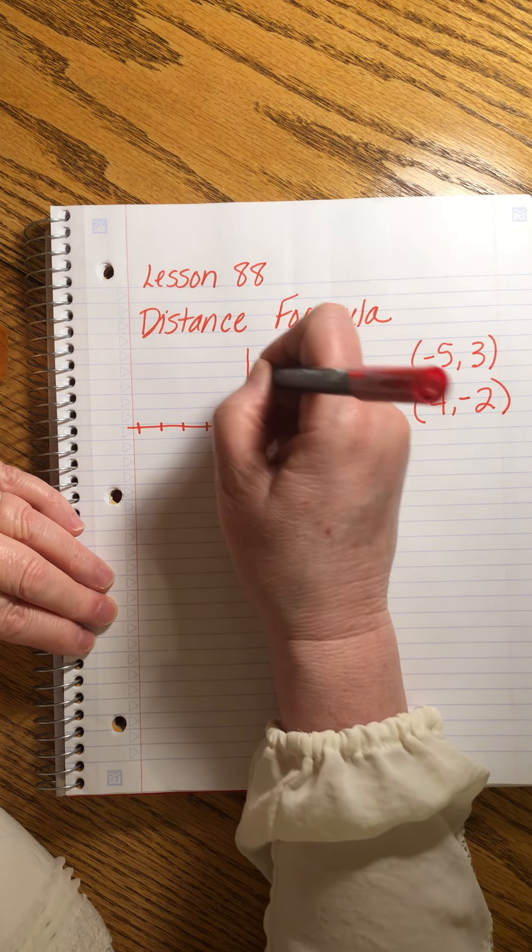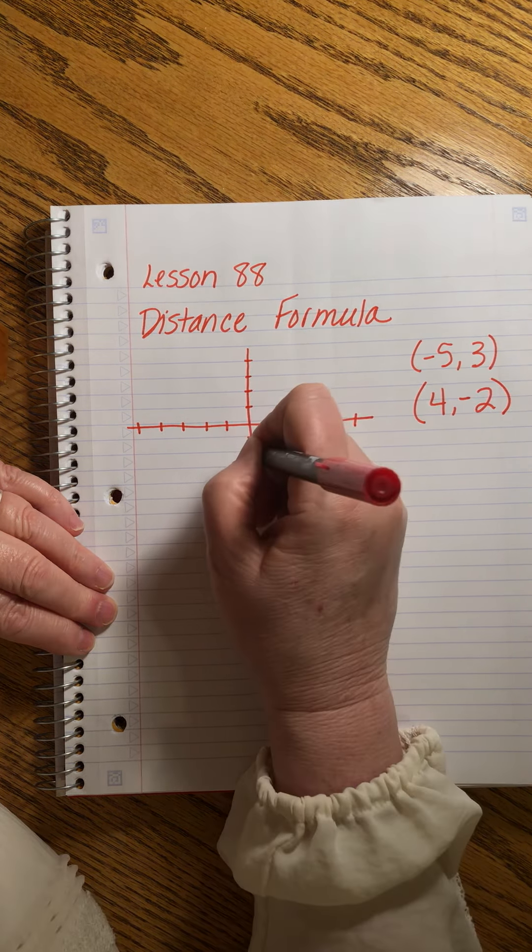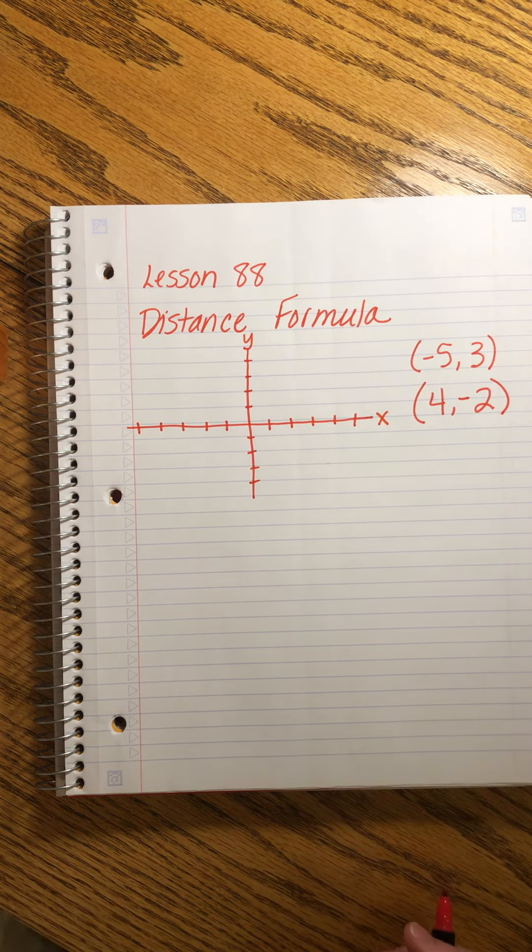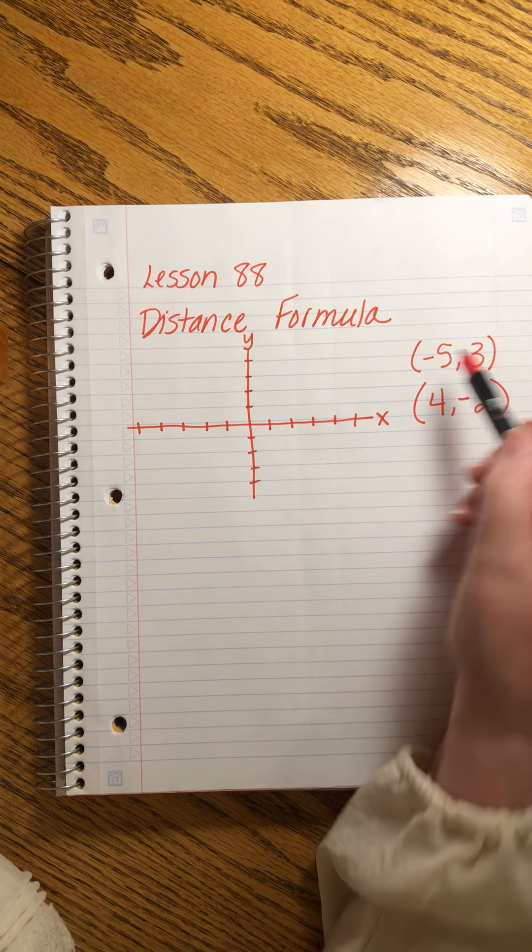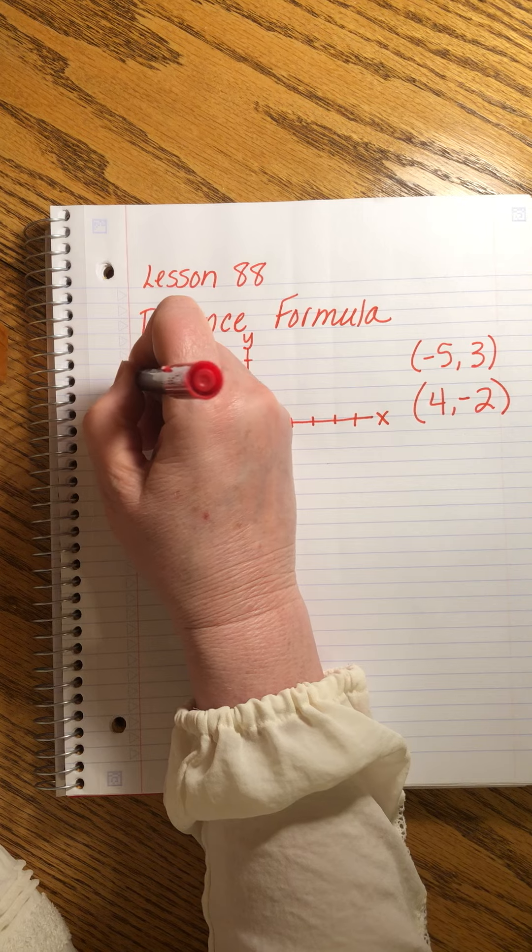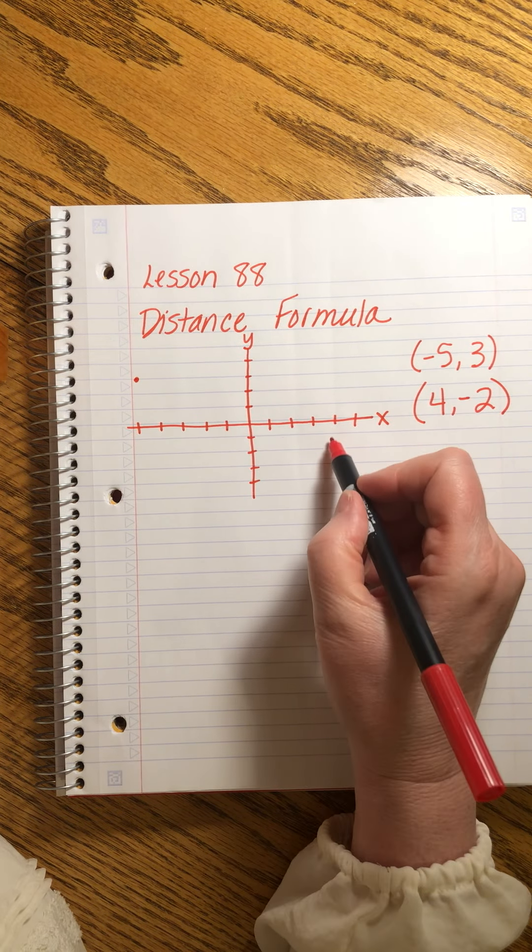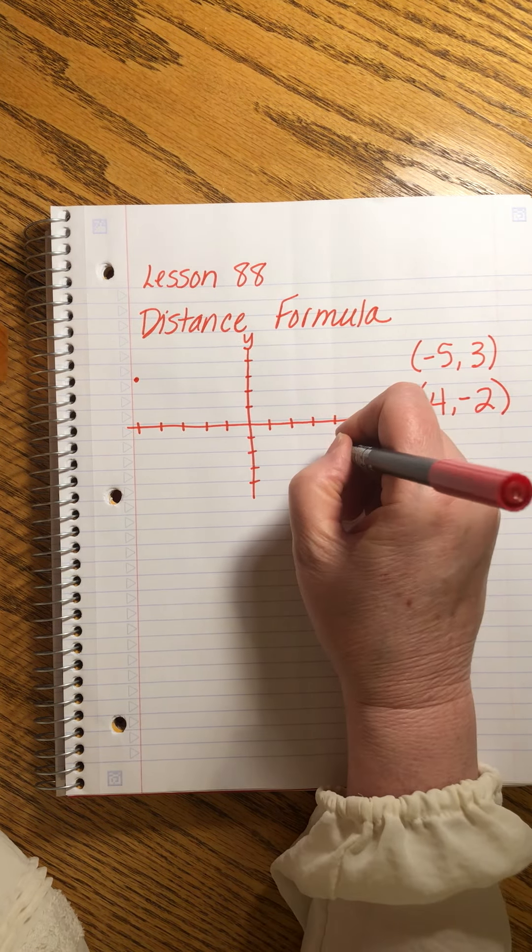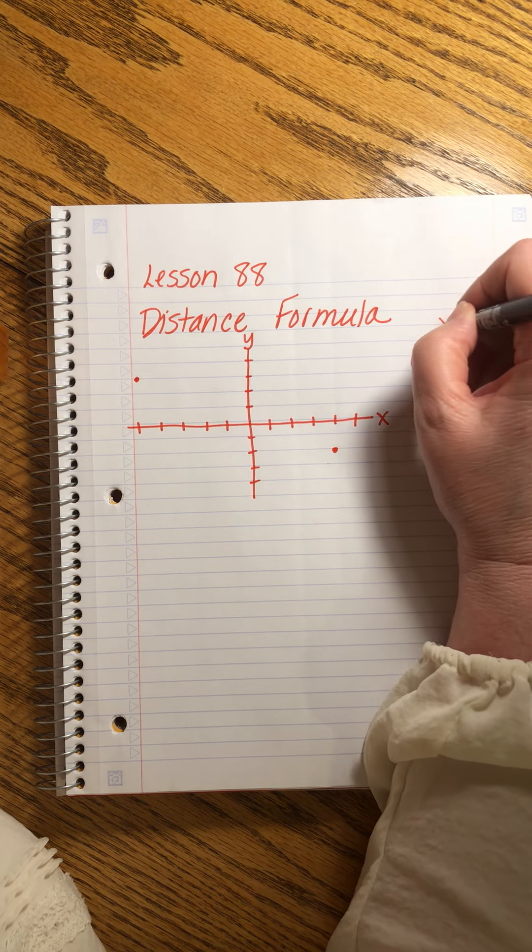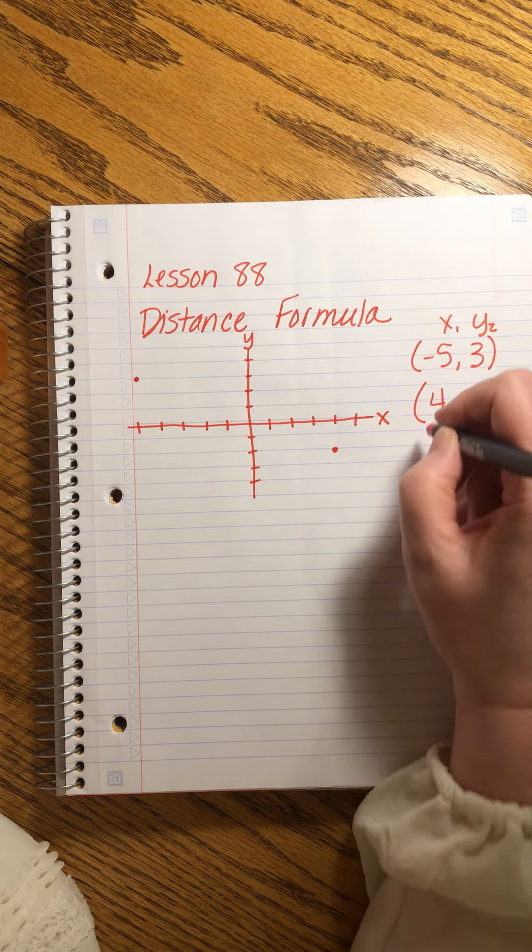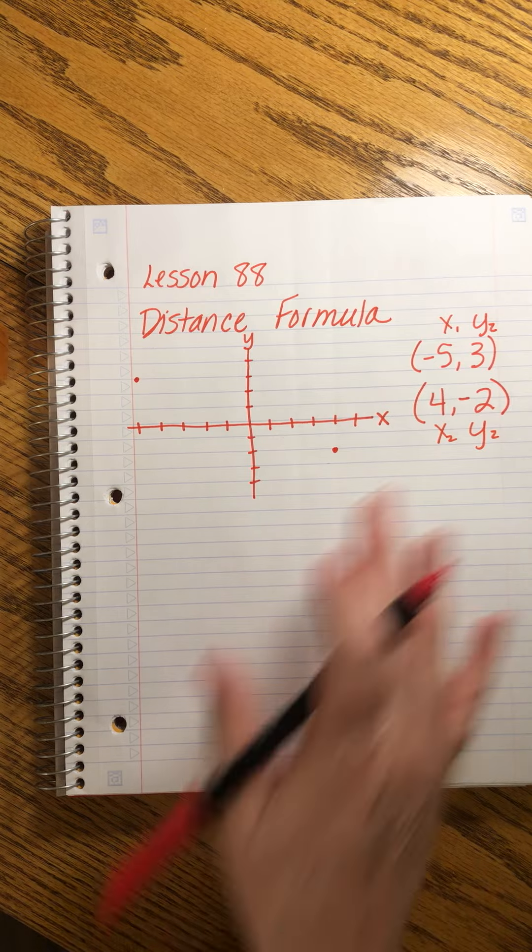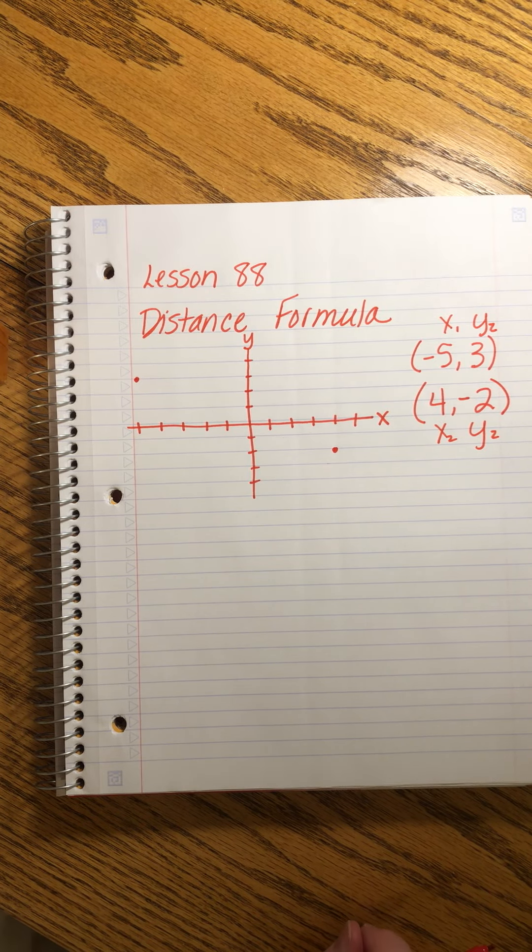Okay and then of course I just use my blue lines on the y-axis, right? Remember this is the y-axis and this is the x-axis. Okay so minus 5 plus 3. This point is right about there and 4 minus 2. This one's down here. Okay remember we can also label these x1, y1, x2, and y2, right? That's perfectly fine to do. We did that with our slope formula.